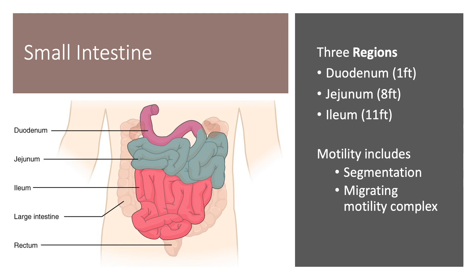The two types of motility we're going to talk about — remember, those are the contractions that mix and propel the contents — will be segmentation, which we've touched on previously, and then the migrating motility complex.